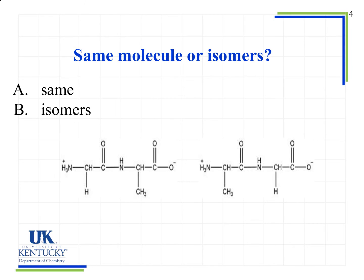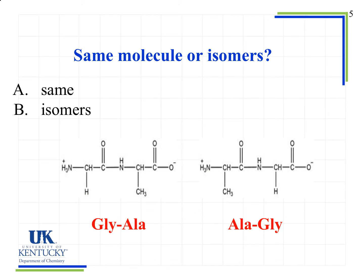Now we want to look at these two molecules and see if they are the same molecule or isomers. These molecules are actually isomers of one another, so B is our correct answer. Starting from the N-terminus, the first molecule has a CH with an H, while the second has a CH with a CH3. So while they have the same two side groups within that dipeptide, they're in a different order, and because of the way they're connected in the backbone, these have a different structure — they are isomers.